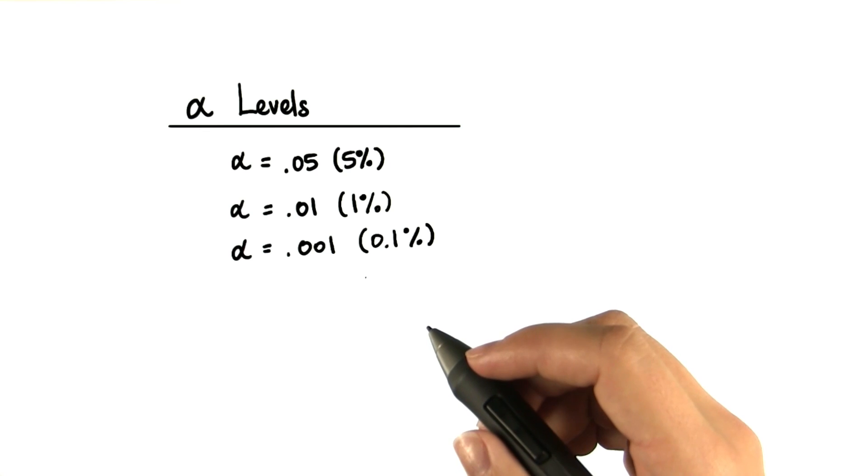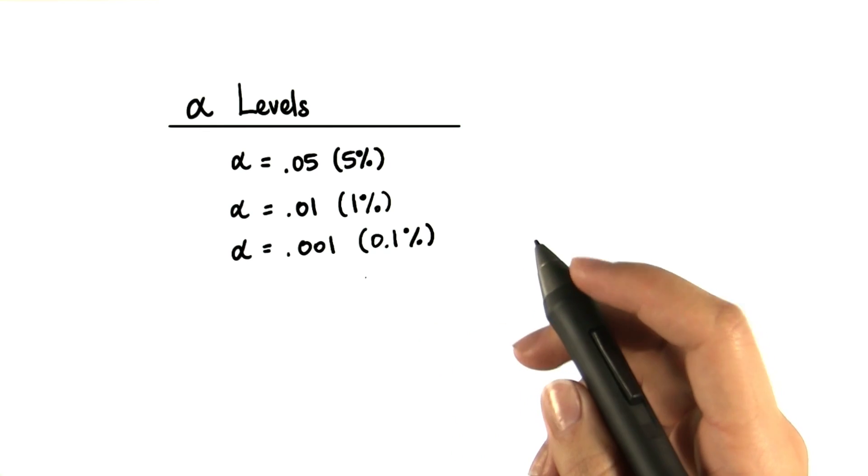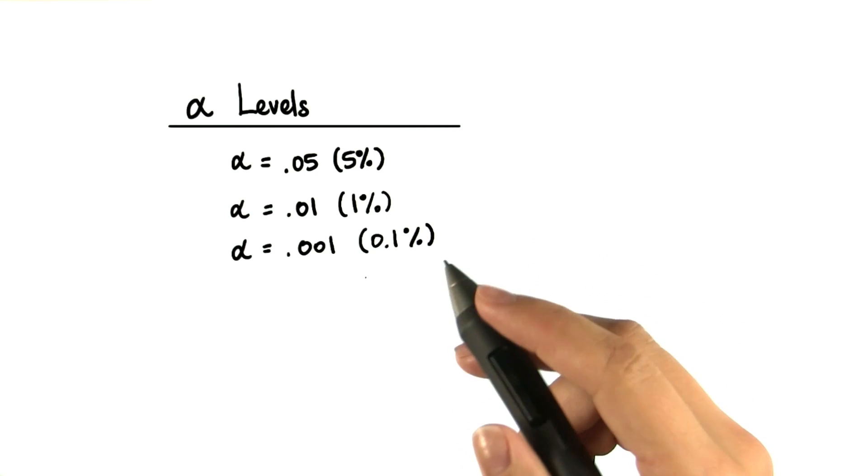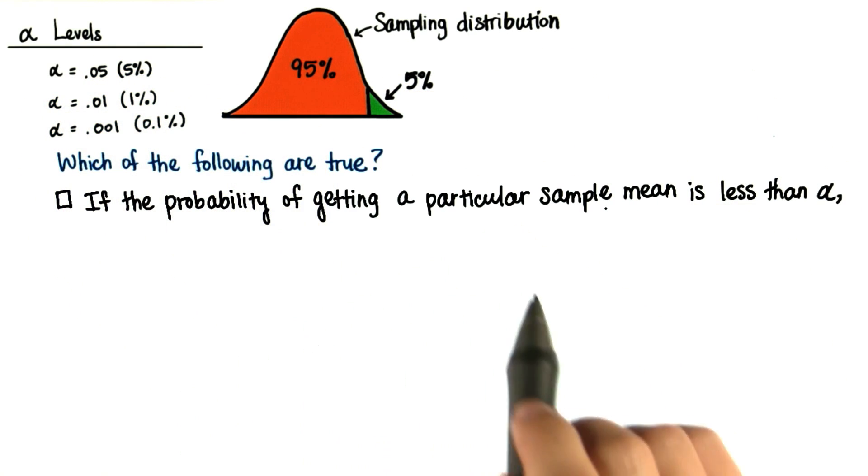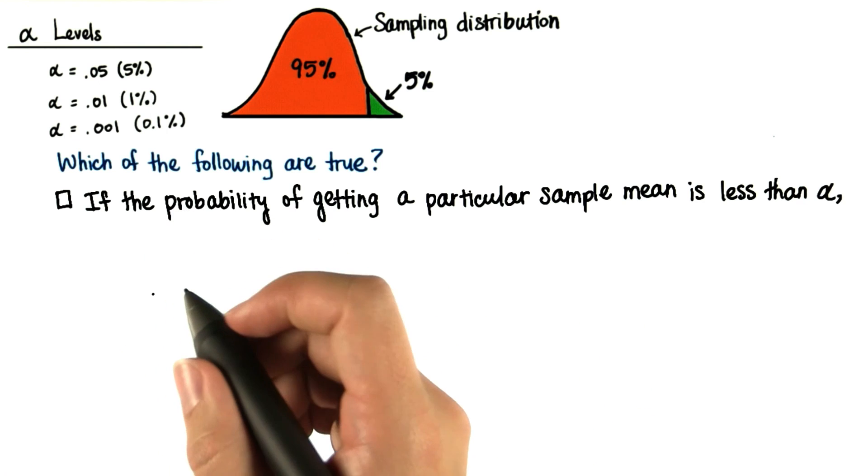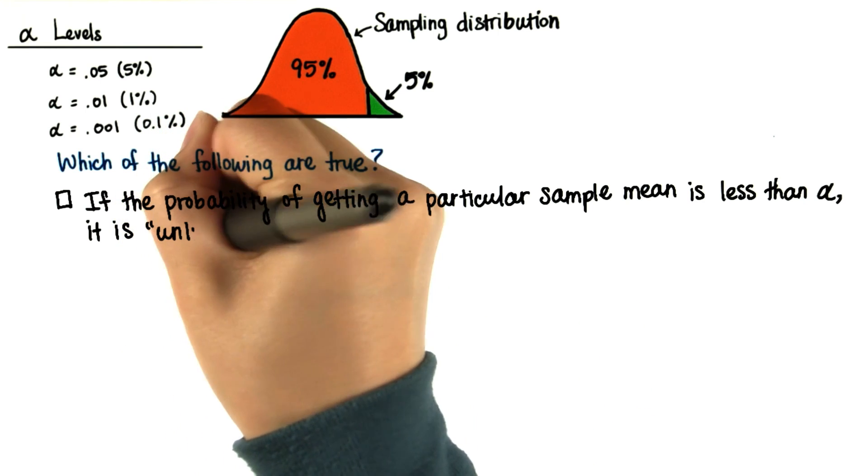Now let's take a quick quiz to make sure you understand what alpha levels are. Let's focus on an alpha level of 0.05. Which of the following are true? If the probability of getting a particular sample mean is less than alpha, it is unlikely to occur.